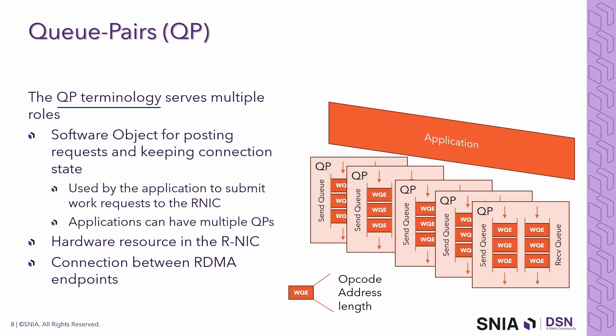A QP also represents a connection between two RDMA endpoints. Two examples are a QP paired with a remote QP — referred to as RC, Reliable Connection — and a QP that can send to multiple destinations, referred to as UD, Unreliable Datagram.